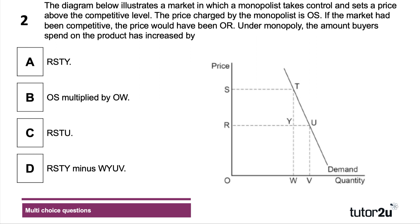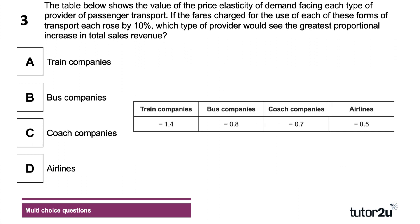This is a tricky question — many students got it wrong. Many chose A, but the correct answer is D. The extra spending from the monopoly charging a higher price would be area RSTY, but a higher price also reduces quantity demanded, from V to W. The area WVUY represents the fall in spending due to reduced demand. The net effect is the top box minus the bottom box, giving area D.